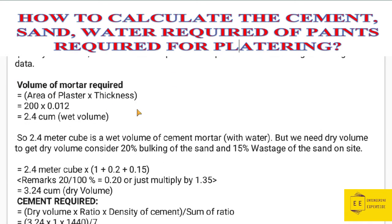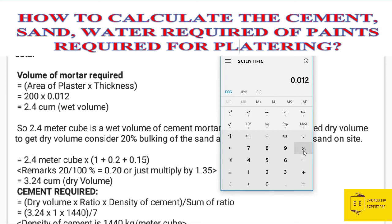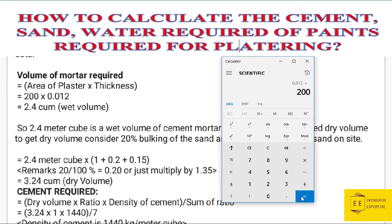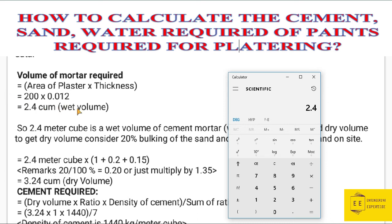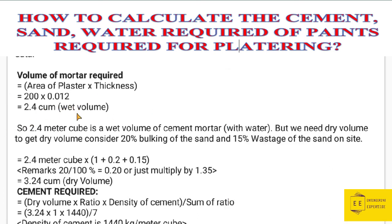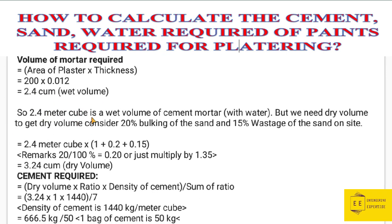To calculate the volume of mortar required: we have an area of 200 square meters, multiplied by the plaster thickness of 0.012 meters. Calculating: 0.012 multiplied by 200 square meters gives us 2.4 cubic meters. So the wet volume of the mortar is 2.4 cubic meters.